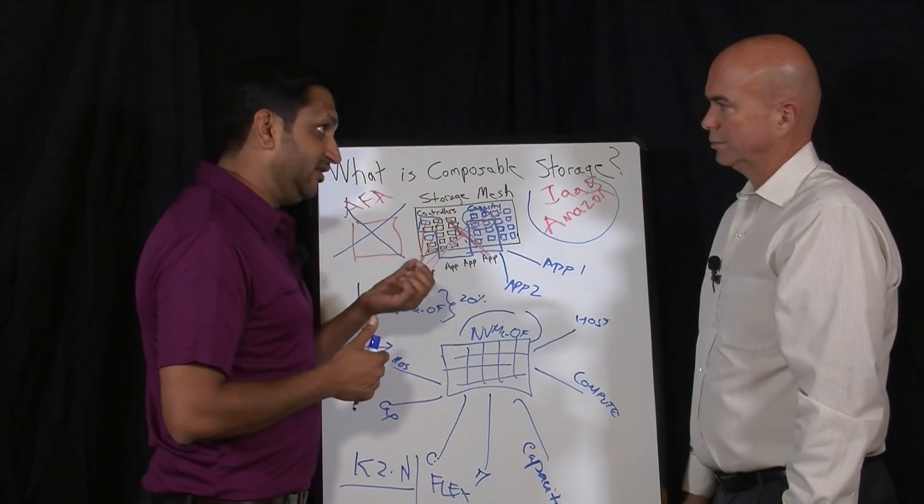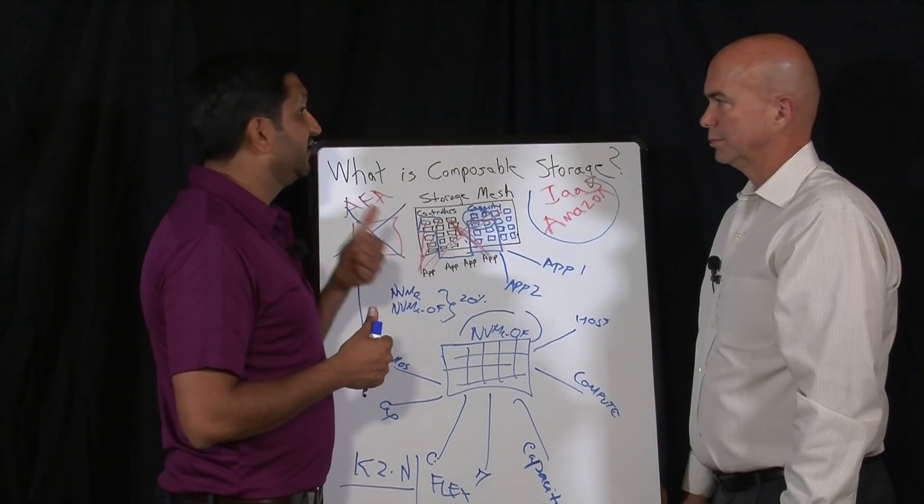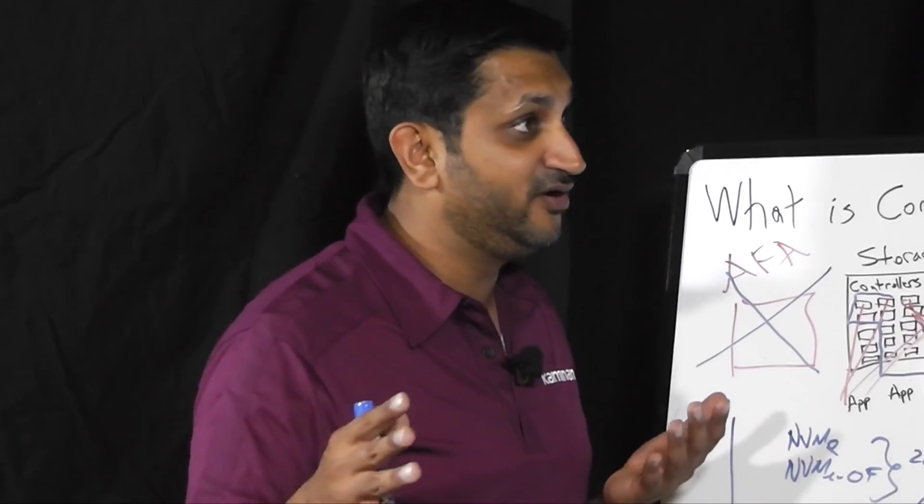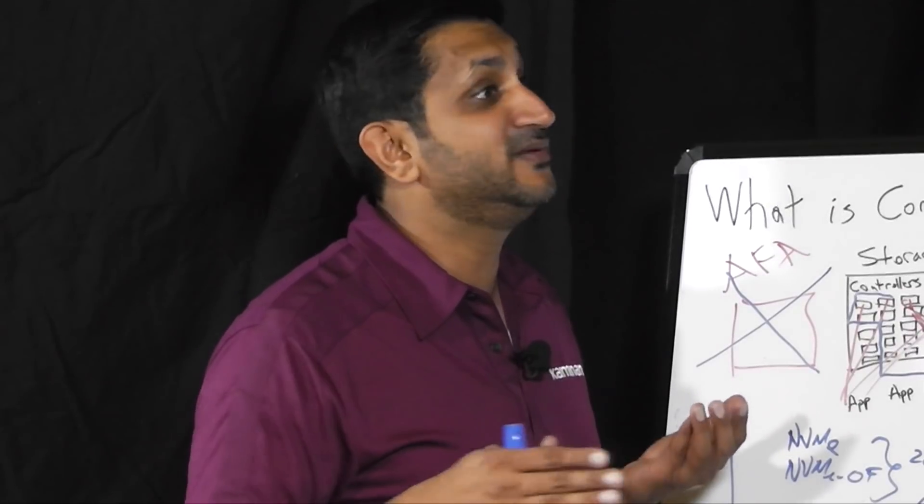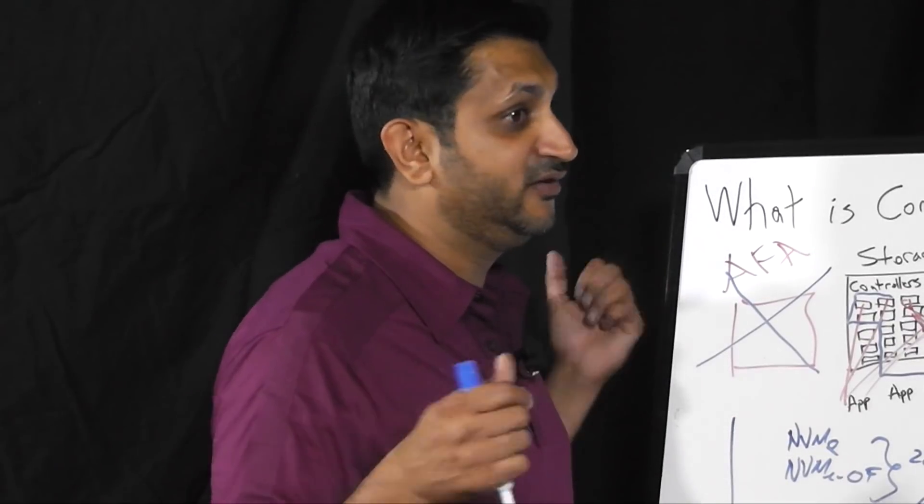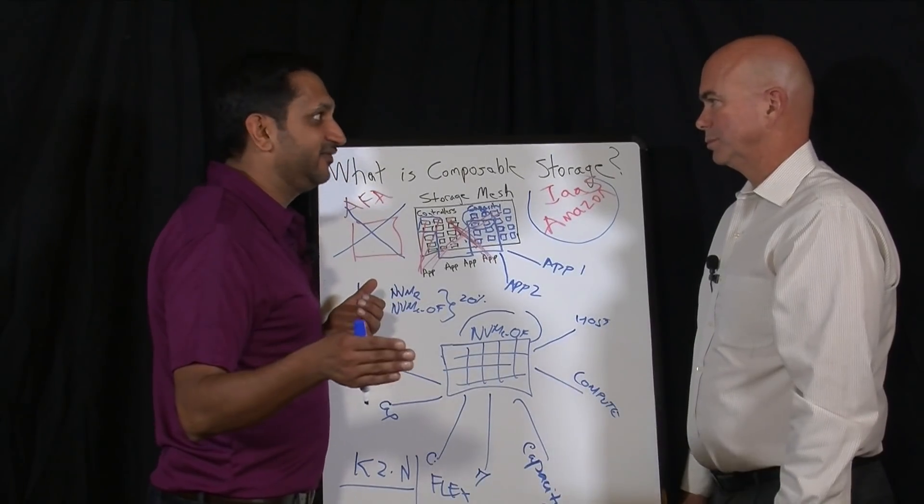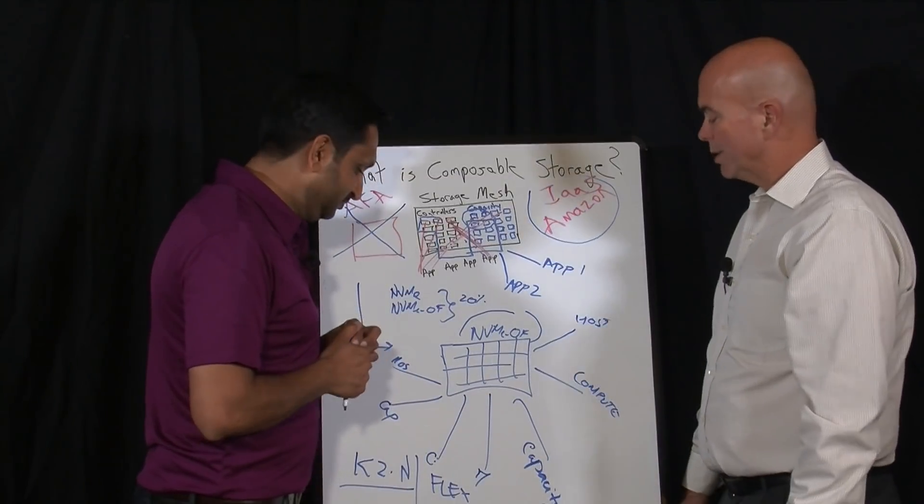That's our first goal, and then your granularity of scaling becomes a single controller. You can add one, two, three, four X number of controllers in a ratio of X number of drive shelves. You can have 10 controllers and only one drive shelf if really what you need is performance, or you can have one controller and 10 drive shelves if what you need is capacity. Makes sense.